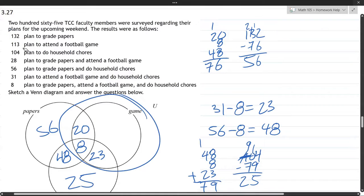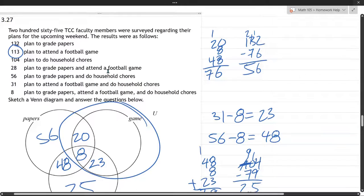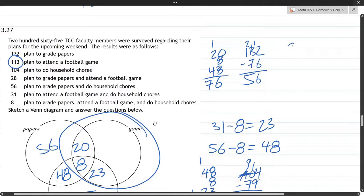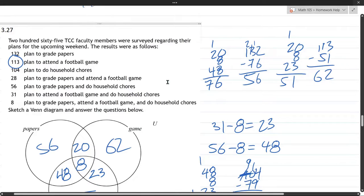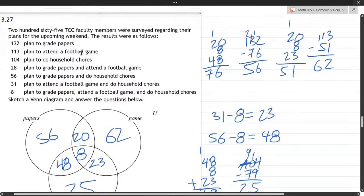Last up the game. 113 for the game. But, of course, we already have 20 and 8 and 23. So that's 8 and 3 is 11. Carry your 1, 51. But we've got 113 minus 51. 2, 6, 62. So inside that circle, I should have 113. Okay. Now we should be able to answer any question.